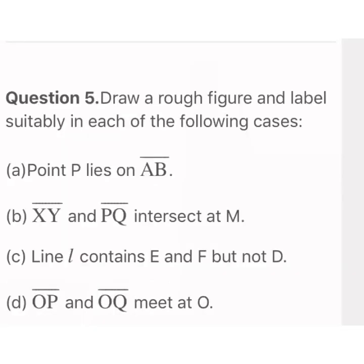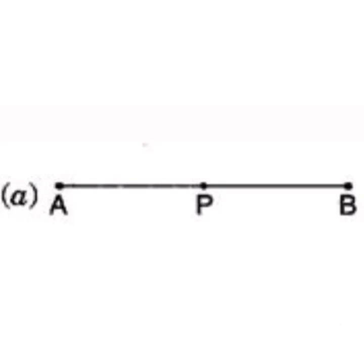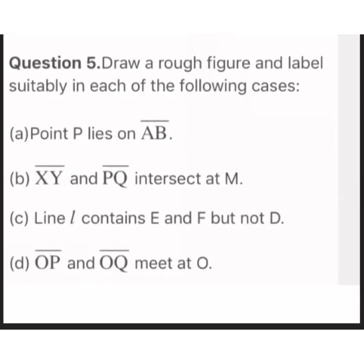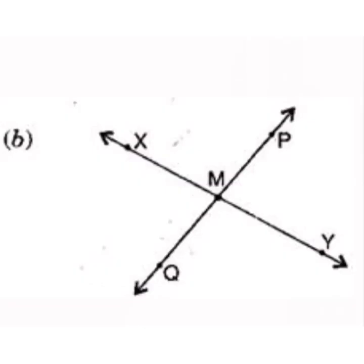Question 5: draw a rough figure and label suitably in each case. First: point P lies on line segment AB — in the figure, line segment AB is given and point P is between A and B. Second: XY and PQ intersect at M — lines XY and PQ are drawn and M is the point of intersection, the common meeting point.